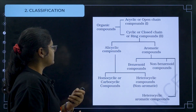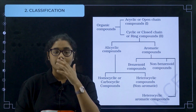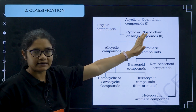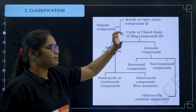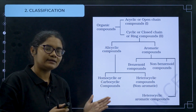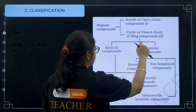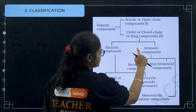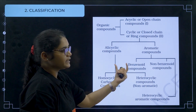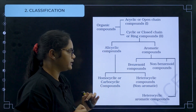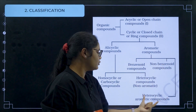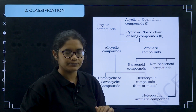Next, we will talk about classification. Carbon compounds are classified based on: first, acyclic compounds and cyclic compounds. Acyclic compounds do not have any cyclic structure. Cyclic compounds have some cyclic structure. Now in cyclic, we have alicyclic compounds and aromatic compounds. In alicyclic, we have homocyclic and heterocyclic. In aromatic, we have benzenoid, non-benzenoid and heterocyclic aromatic compounds.